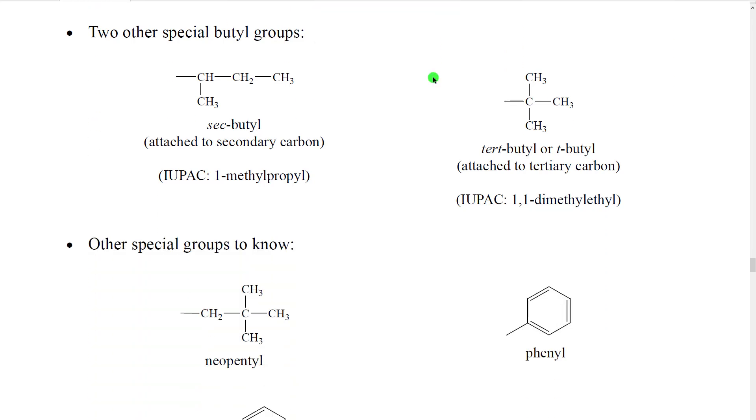There are two other special butyl groups. The first one is this group where if we imagine having a straight chain of four carbons, having a chain of four carbons, and instead of attaching on the end in the normal way, we attach to the second carbon. So this is called secondary butyl, sec-butyl.